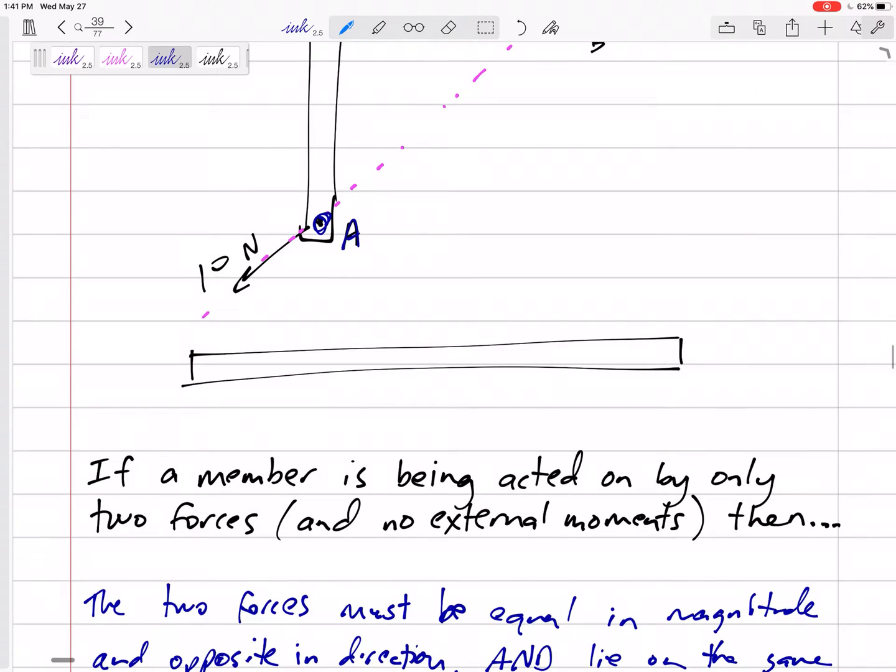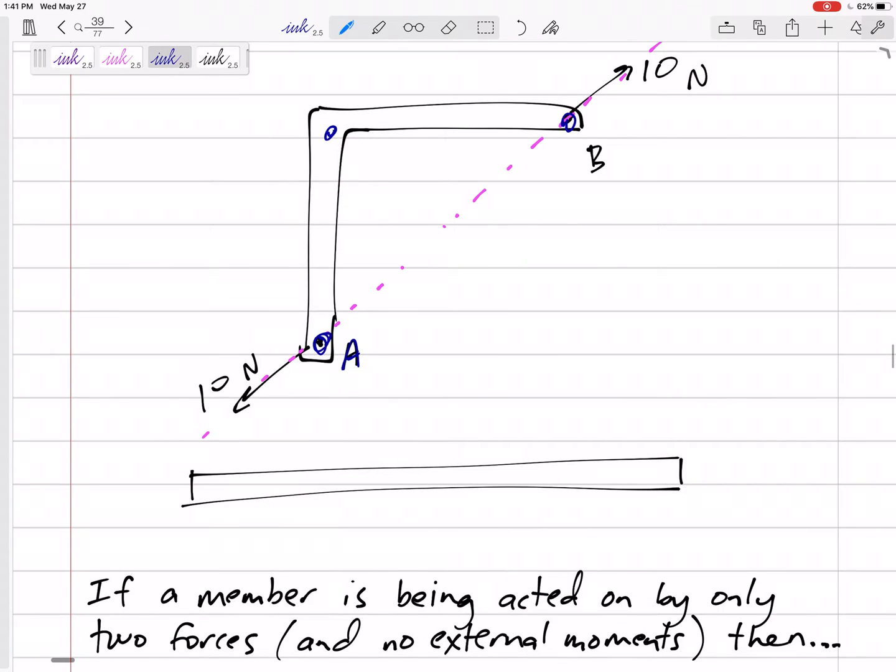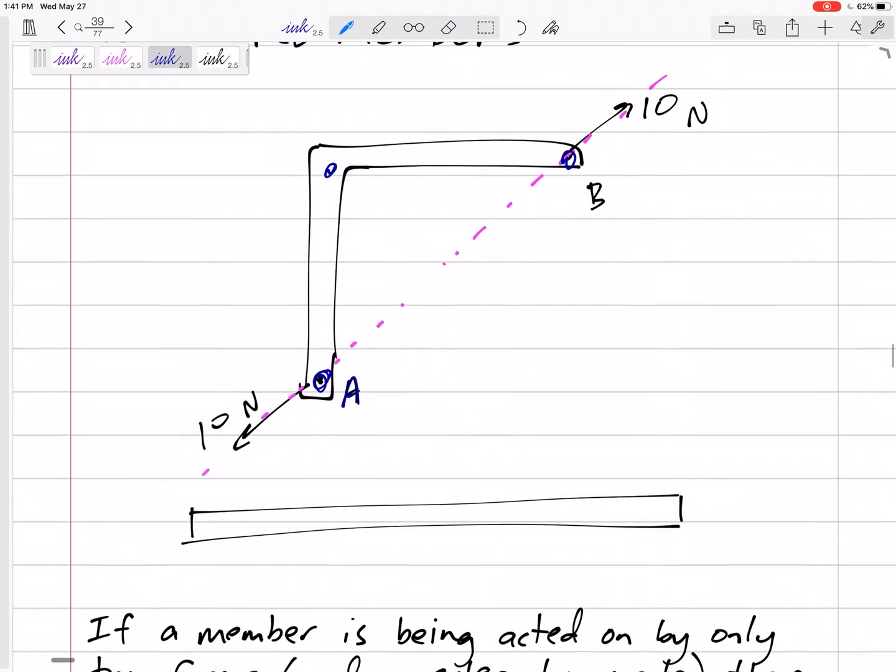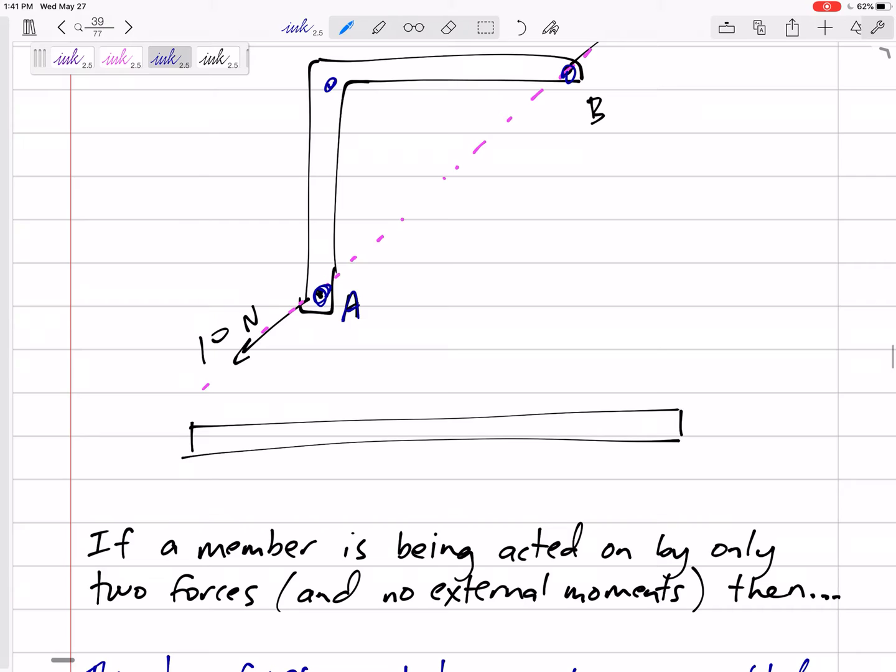So if it's an L beam like this and if there's one force here and one force here and no other external forces, no other moments on here, then those forces must be right here. What if we have A and B, then it means they have to be right there along that same line of action. Now they might be that way or they might be this way, equal in magnitude, opposite in direction on the same line of action, the line of action that connects the two forces.